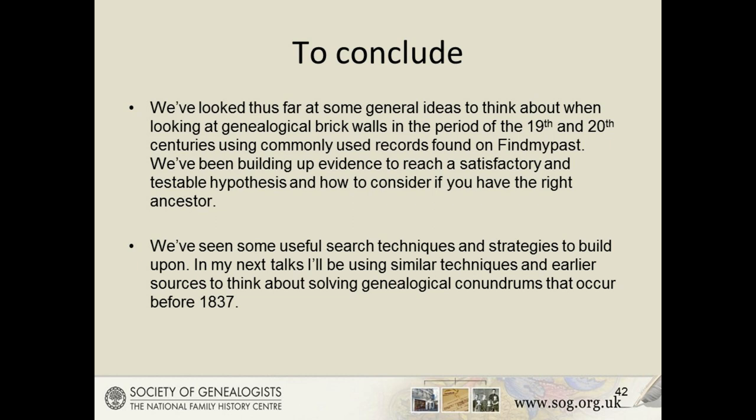So to conclude, we've looked at some general ideas to think about when looking at a genealogical brick wall in the period of the 19th and 20th centuries using commonly used records found on Find My Past. We've built up evidence to reach a satisfactory and testable hypothesis of how to consider if you have the right ancestor. The trick is to put records together and use them to build up the evidence. We've seen some useful techniques and strategies. In my next talk, I'll be using similar techniques and earlier sources to think about solving genealogical conundrums that occur before 1837.